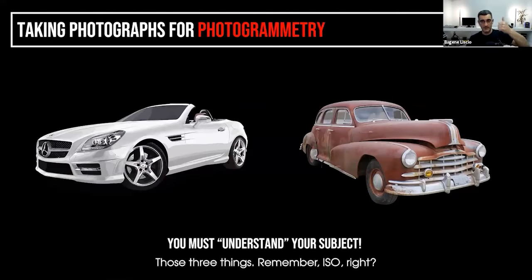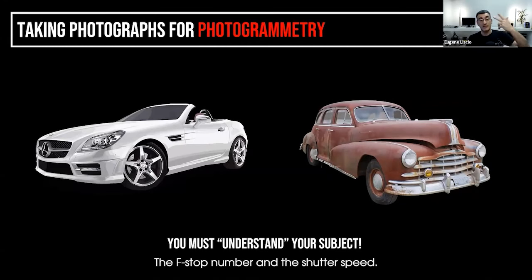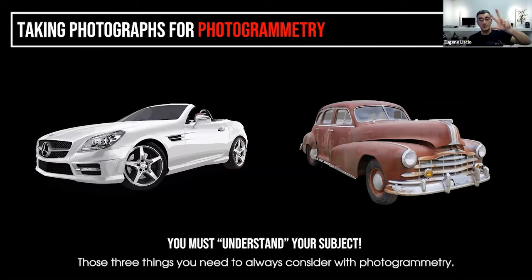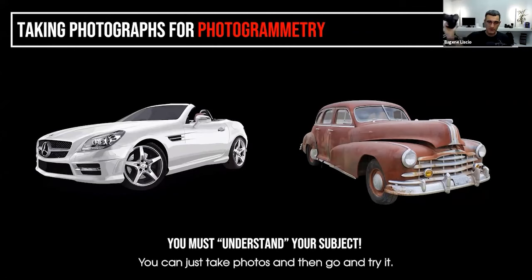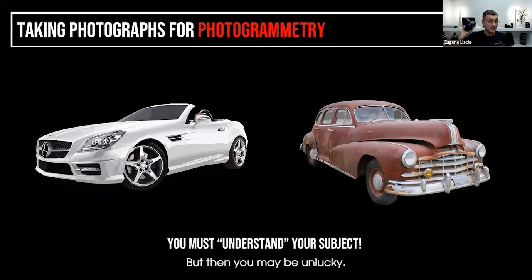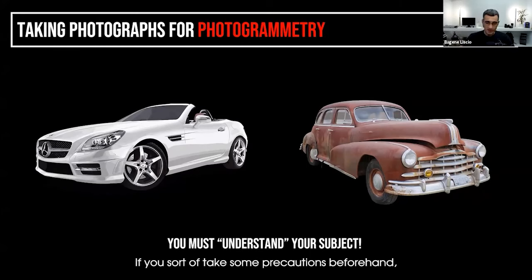Those three things — ISO, f-stop number, and shutter speed — you always need to consider with photogrammetry. You can set it to automatic and just take photos and maybe get lucky, but you may also be unlucky. If you take some precautions beforehand, you can set yourself up for much better results.